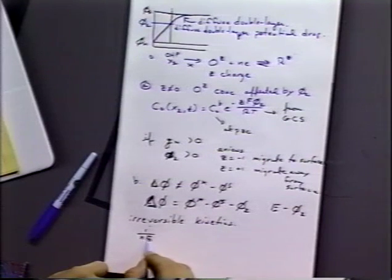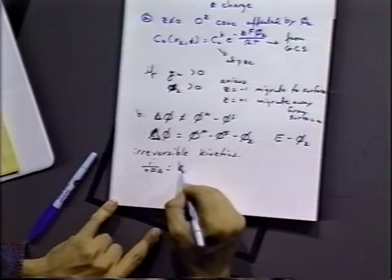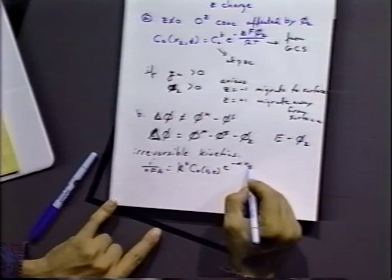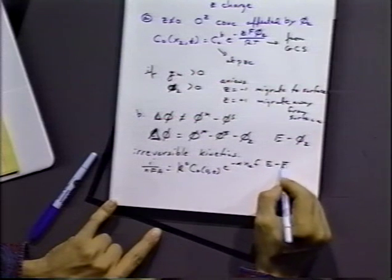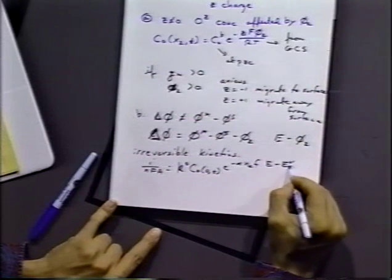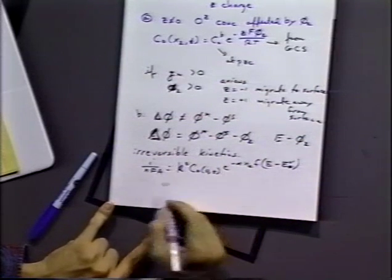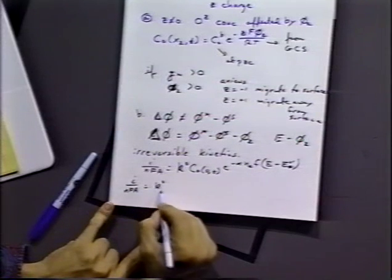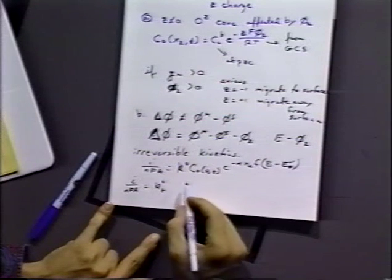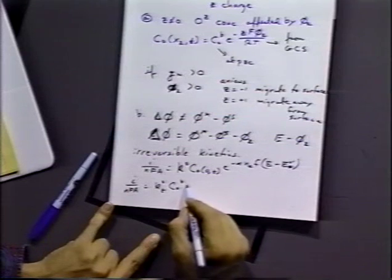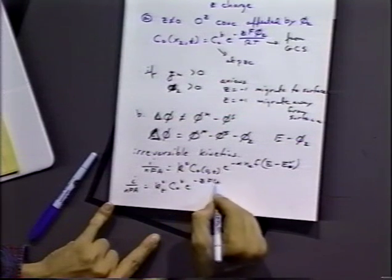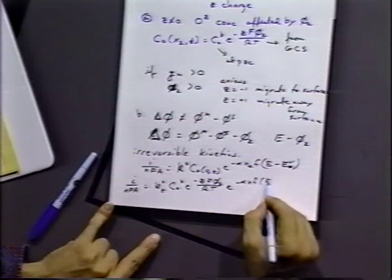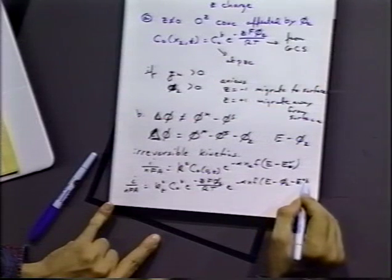We can incorporate this for irreversible kinetics. For no phi-2 effects, the normal expression is: rate equals k0 times the concentration of O at the electrode surface times e to the minus alpha·n_a·F·(E minus E0-prime). But with the phi-2 corrections, we get: rate equals k0_true times C_O-bulk times e to the minus Z·F·phi-2 over RT, times e to the minus alpha·n·F·(E minus phi-2 minus E0-prime).